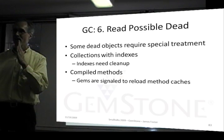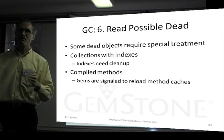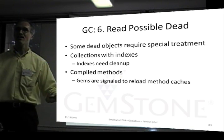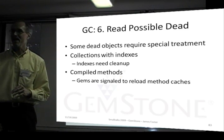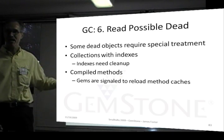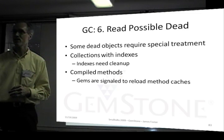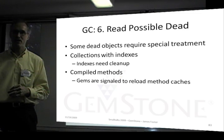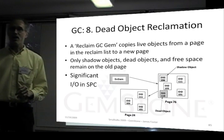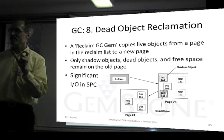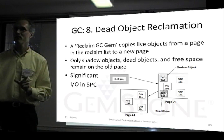Now we have a list of possible dead that are not referenced by anyone. If they're not referenced by any current session or any commit record that's happened since we started, then we know they're dead. Some things require special treatment: indexes need cleanup, compiled methods need to notify gems to reload the method cache. At this point, possible dead are dead but not yet reclaimed. We have a list of dead objects that we know are dead and we're going to reclaim them, but we haven't reclaimed them yet.